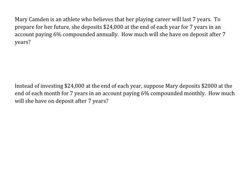Mary Camden is an athlete who believes her playing career will last seven years. To prepare for her future, she deposits $24,000 at the end of each year for seven years in an account that pays 6% compounded annually. How much will she have on deposit after seven years?